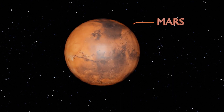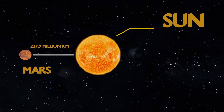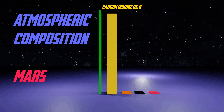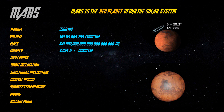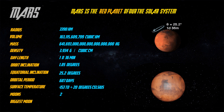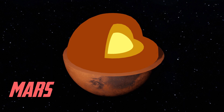Mars is the red planet of our solar system. It is 227.9 million kilometers from the Sun. Its atmosphere is mainly made up of carbon dioxide. It has a rich deposit of iron oxide, which is why it is called the red planet. It has two moons, and the biggest moon of Mars is Phobos. It has mainly three layers.